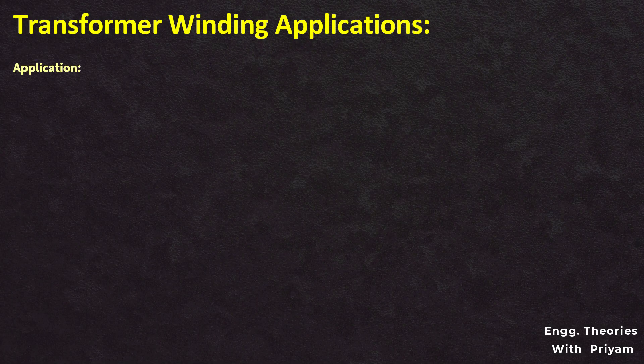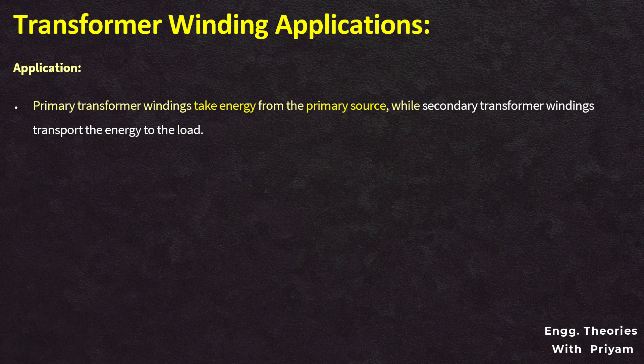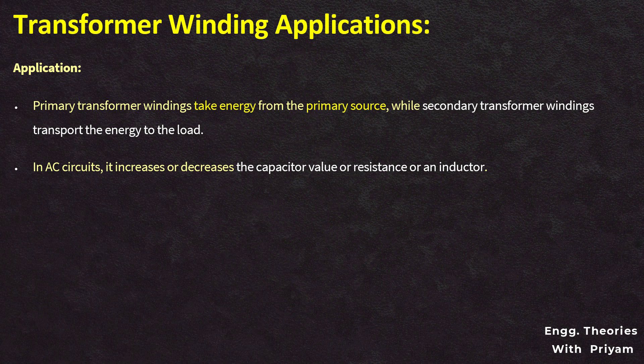Transformer windings come in two varieties: primary and secondary. Primary transformer windings take energy from the primary source, while the secondary transformer windings transport energy to the load. In AC circuits, it increases or decreases the capacitor value, resistance, or inductor. The transformer windings can increase or decrease the voltage or current level.